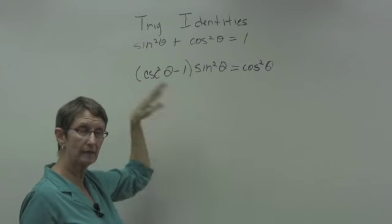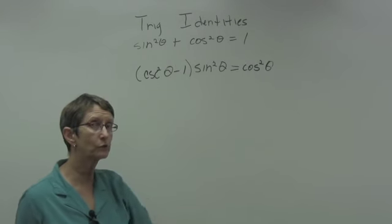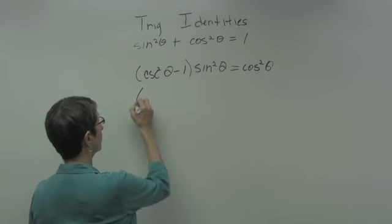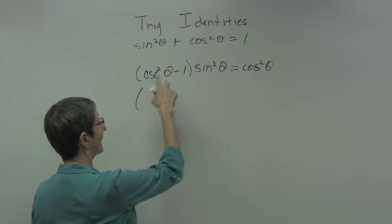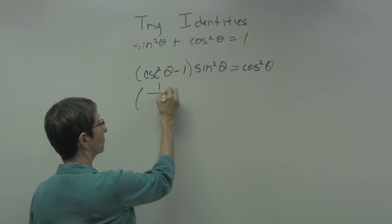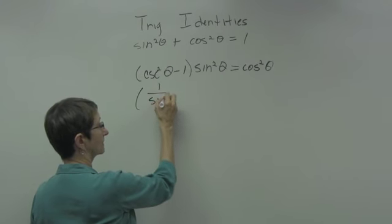This is a little complicated. Cosecant is 1 over sine, so cosecant squared would be 1 over sine squared of theta.